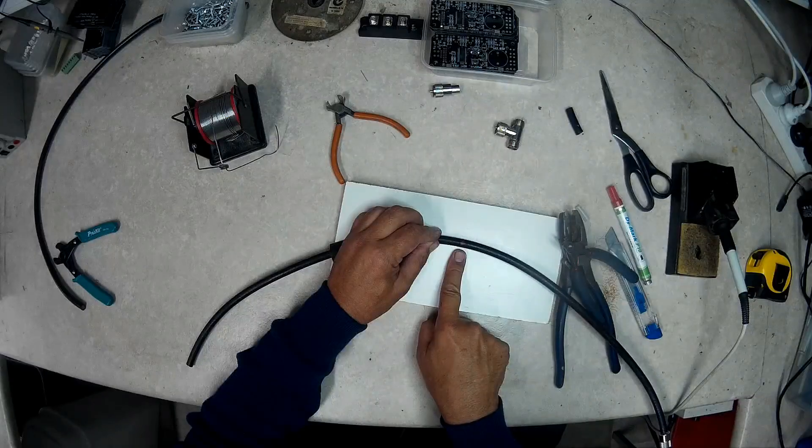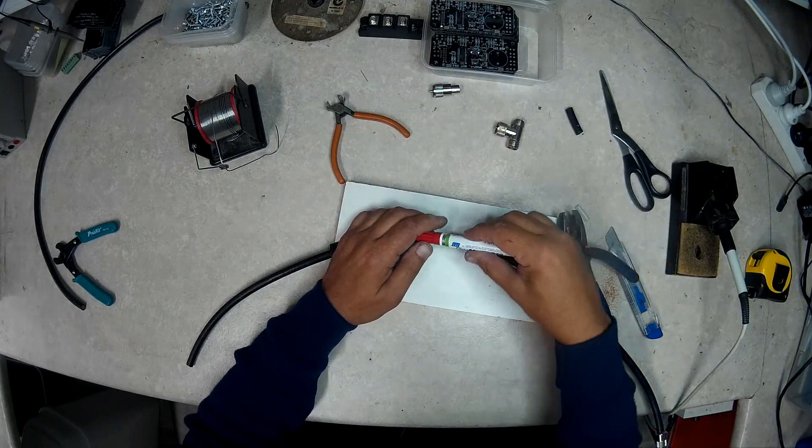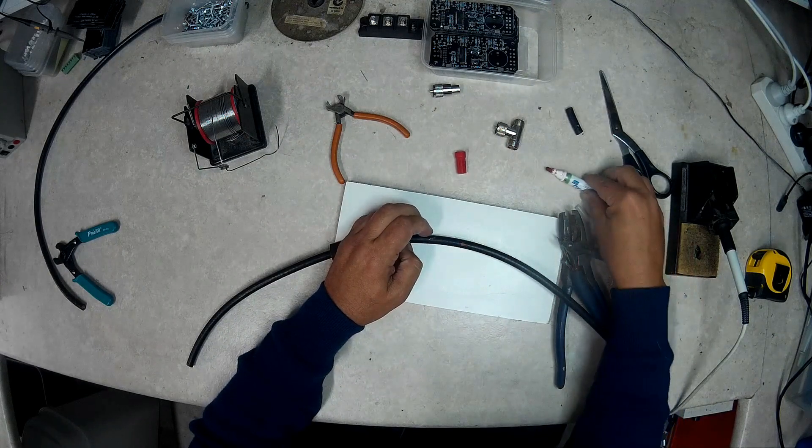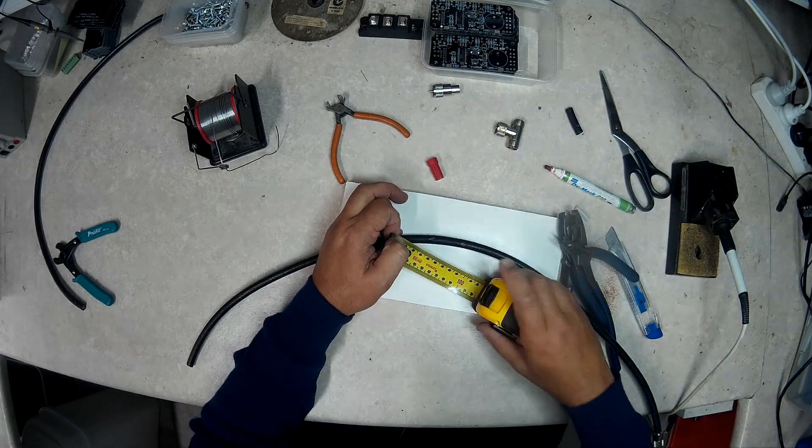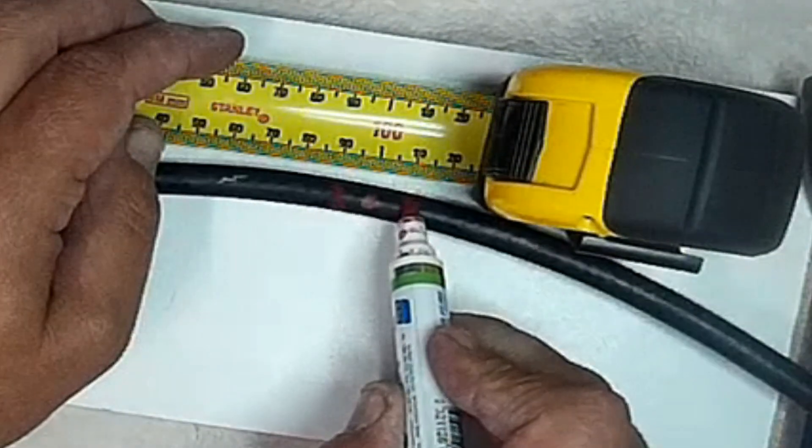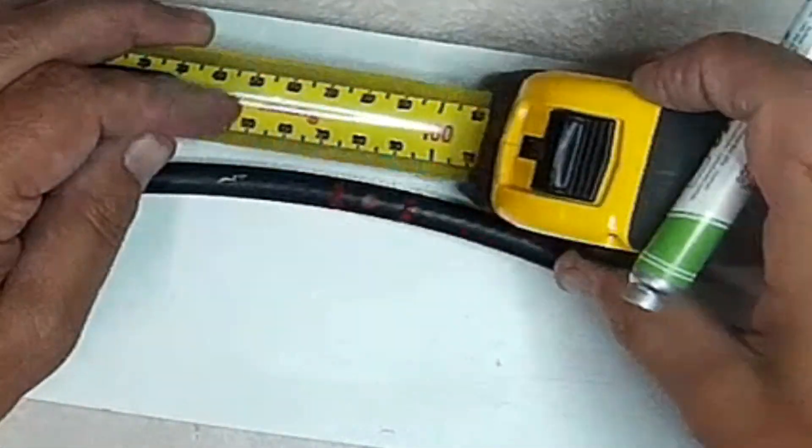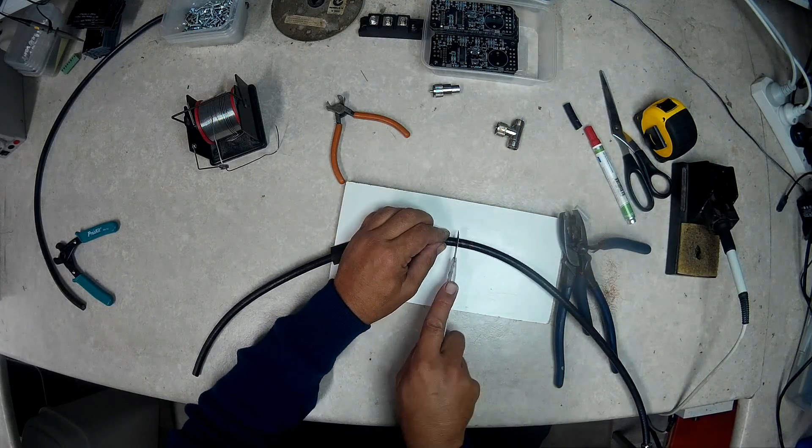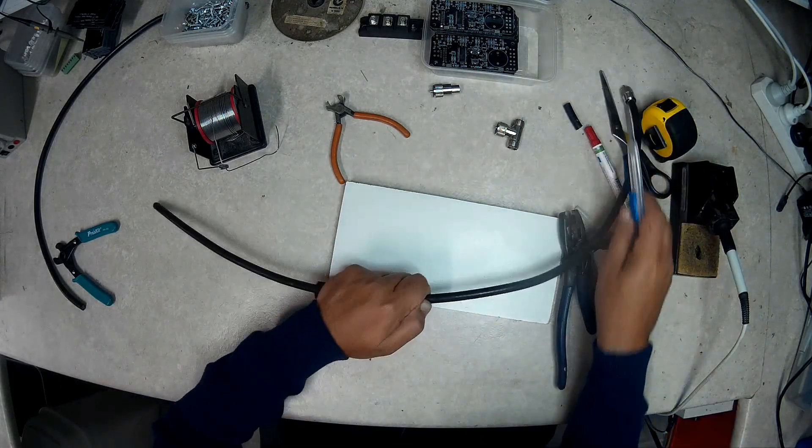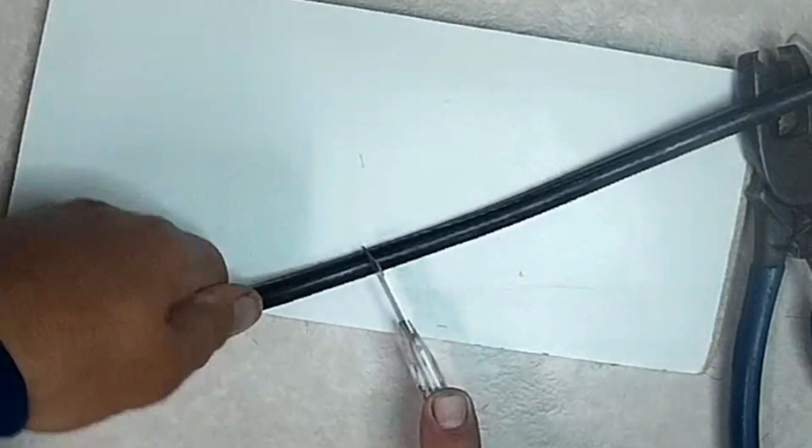Now we must find the center of the cable, where it was previously marked, and measure about 10 millimeters either side of the spot. With the knife, score around these two marks, and carefully remove the outer sheath of this 20 millimeter section.